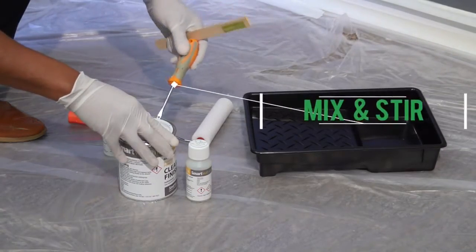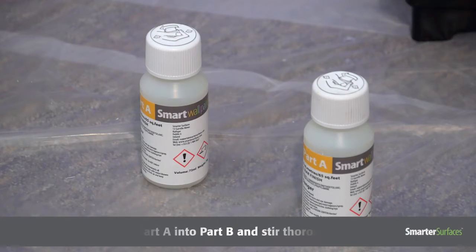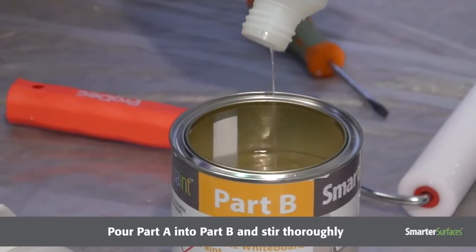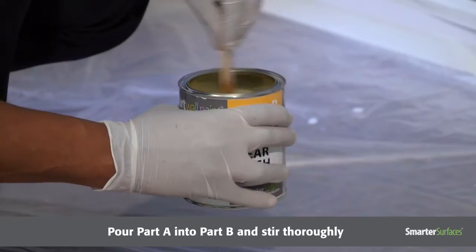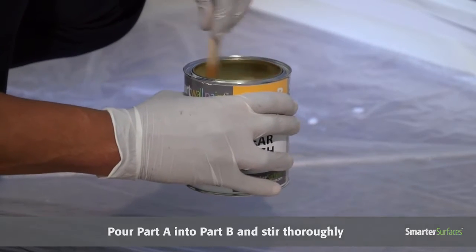Step 5. Mix and stir your SmartWall Paint Clear. Pour Part A into Part B and stir thoroughly for no less than 5 minutes. Once mixed, you have 1 hour to apply the product. Remember, high temperatures will reduce this time.